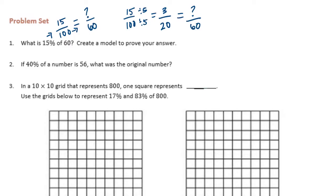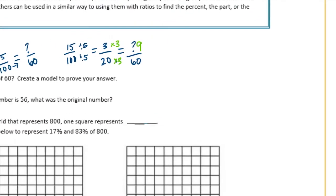So 3 twentieths is equal to what out of 60? Now that I can easily multiply and figure out, 20 times 3 is 60, so we just need to do 3 times 3 is 9. So it should be 9. But let's create a model to prove that.